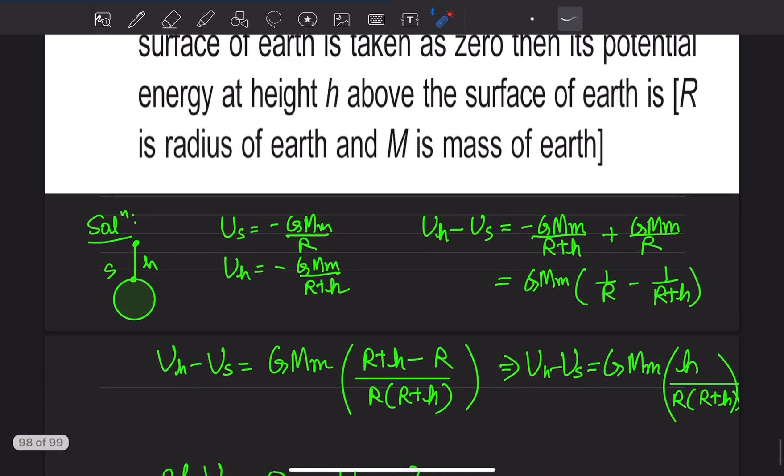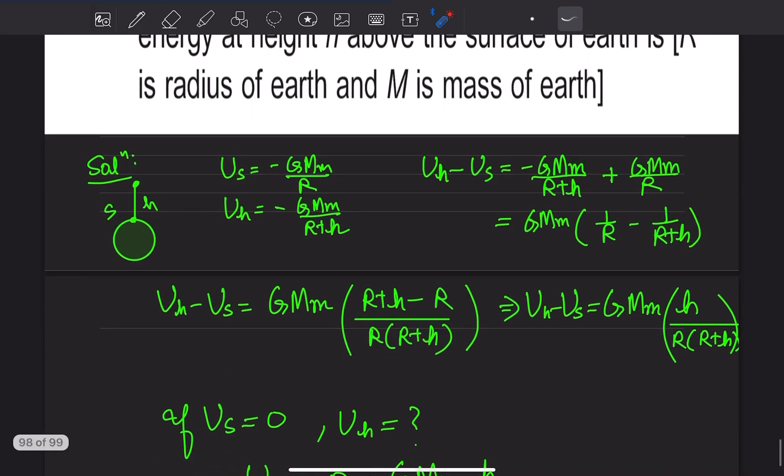Solve करेंगे LCM लेके, तो हमारे पास आएगा U_h minus U_s is GMm h by R upon R plus h. तो यह difference रहेगा energy का.